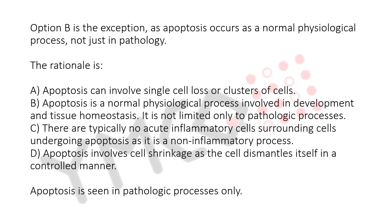c. There are typically no acute inflammatory cells surrounding cells undergoing apoptosis, as it is a non-inflammatory process. d. Apoptosis involves cell shrinkage as the cell dismantles itself in a controlled manner.